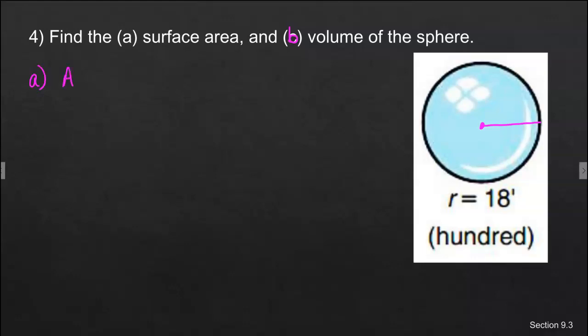My area is 4πr² surface area. Surface area, it's like how much would it take to cover the sphere? We're going to substitute in our numbers, 4π, well it's really just one number, times 18 squared, and then calculate that. So 4,071.5.